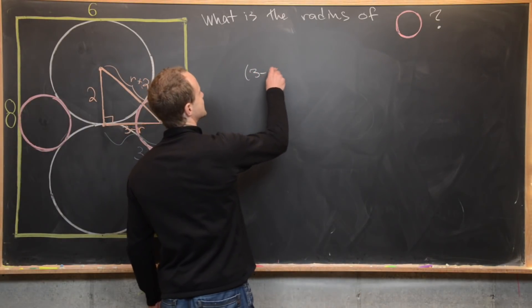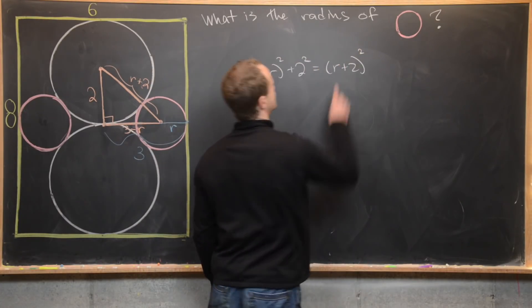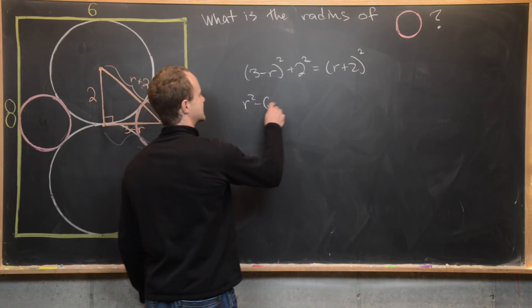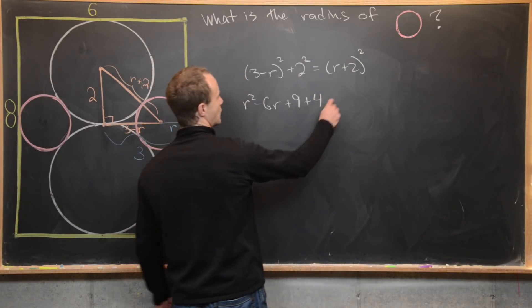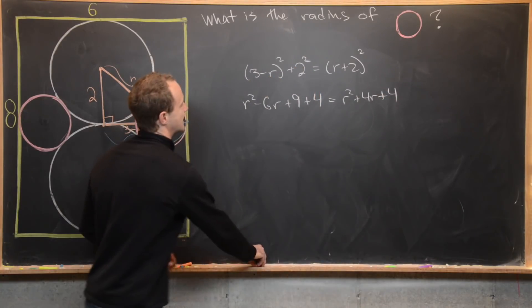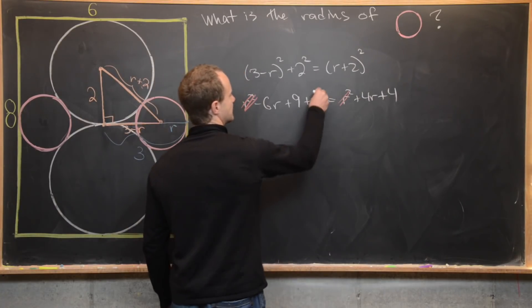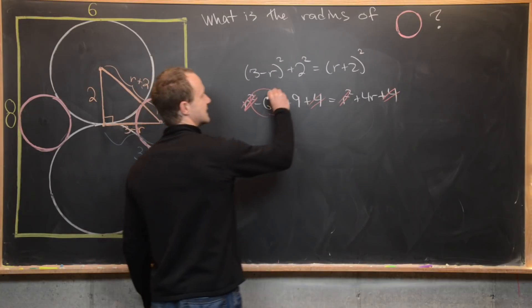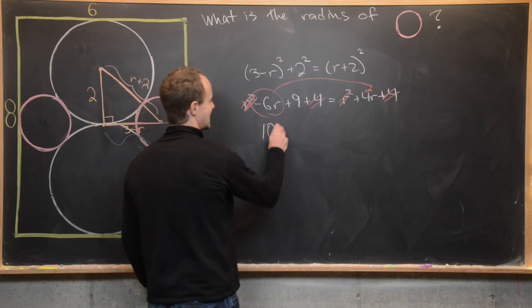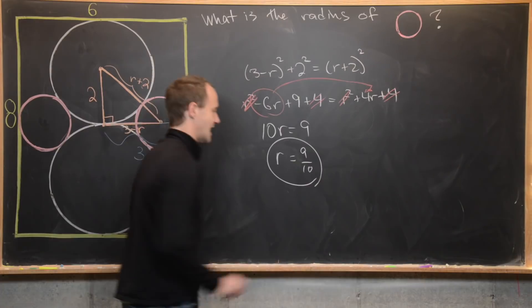Now we apply the Pythagorean theorem: (3 minus r) squared plus 2 squared equals (r plus 2) squared. Expanding gives r squared minus 6r plus 9 plus 4 equals r squared plus 4r plus 4. The r squared terms cancel, the 4s cancel, and combining gives 10r equals 9 — so the radius r equals 9 over 10.